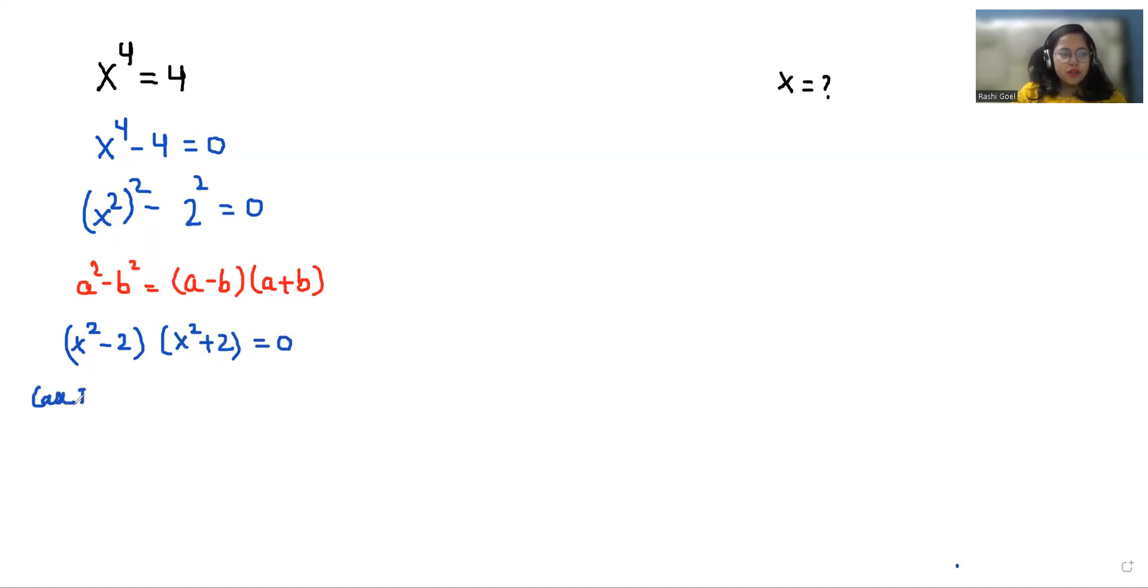So case 1: when x² - 2 = 0, x² = 2, x = ±√2. Now case 2: